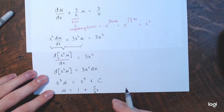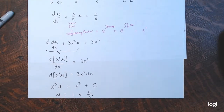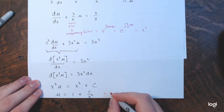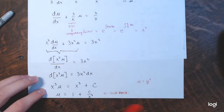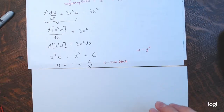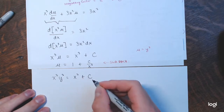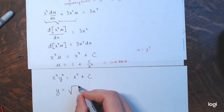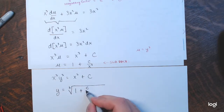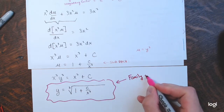But I don't want the solution in terms of u — I want it in terms of x and y. So substituting back: u was y³. Replacing u with y³: x³y³ = x³ plus C, an implicit family of solutions. Solving for y: y equals the cube root of (1 plus C/x³), or equivalently, the cube root of (1 plus C·x^(−3)). This is our family of explicit solutions.